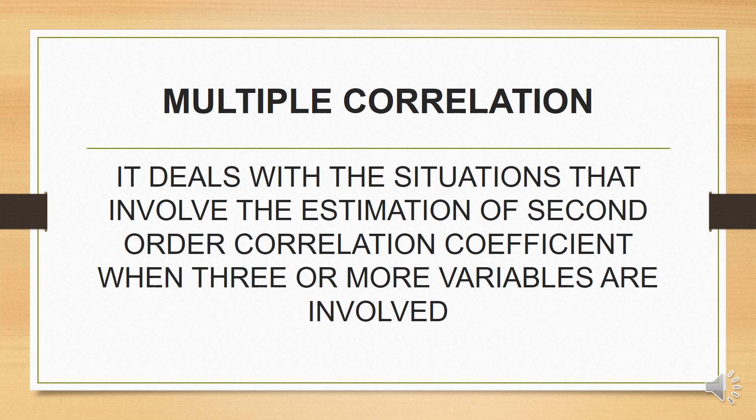Multiple correlation deals with situations that involve the estimation of second order correlation coefficient when three or more variables are involved. For example, if we are interested in estimating height, we will make height the dependent variable and weight, age, etc. the independent variables. Thus in problems of multiple correlation we always have three or more variables, wherein one is dependent and the others are independent variables.